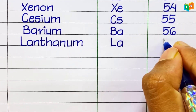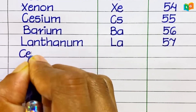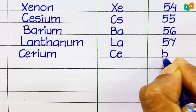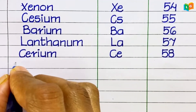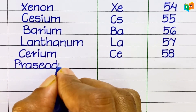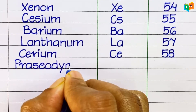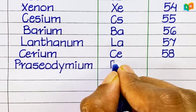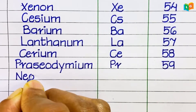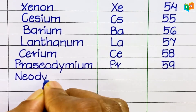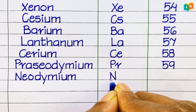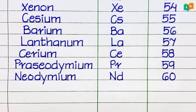Lanthanum, symbol La, atomic number 57. Cerium, symbol Ce, atomic number 58. Praseodymium, symbol Pr, atomic number 59. Neodymium, symbol Nd, atomic number 60.